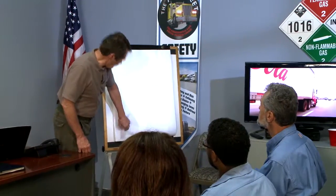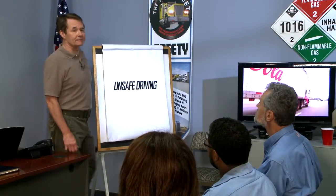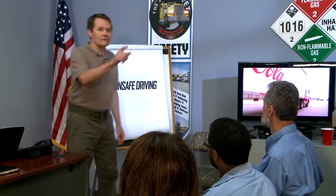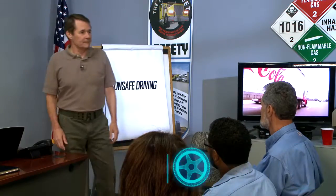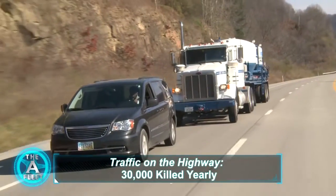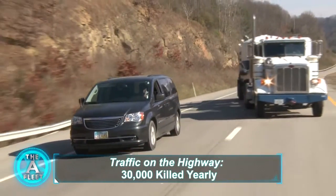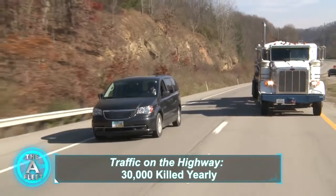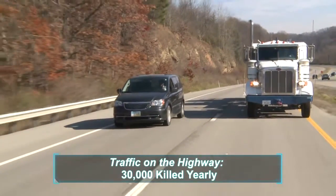The first basic is unsafe driving, and your speeding violation falls under that one. Unsafe driving also includes things like rolling through a stop sign, reckless driving, improper lane changes, and things like that.